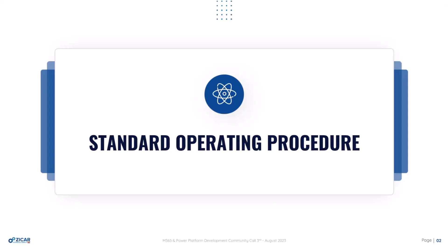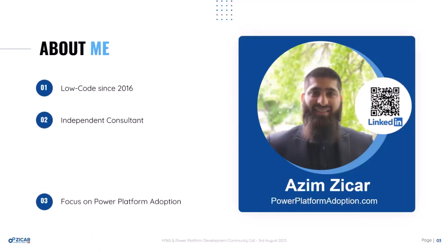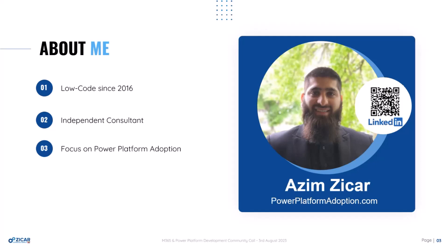For example, if you're doing a marketing campaign, you don't just start sending out emails. You have a process that you go through to gather the emails, create the emails, put a list together, and then send it out. My name is Azim Zikhar. I'm a Power Platform Adoption Specialist, and I focus on helping customers get the most business value out of implementing Power Platform.